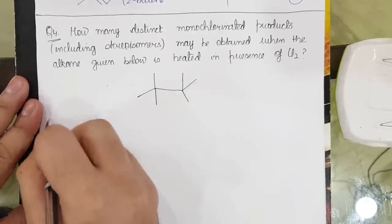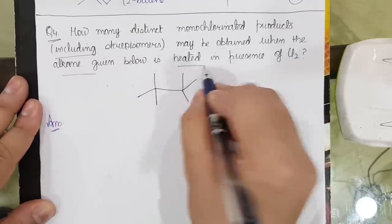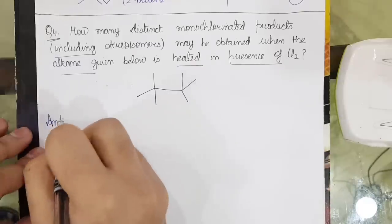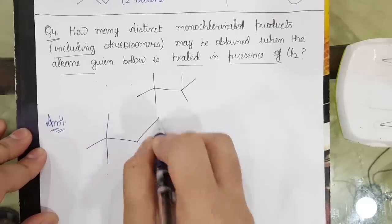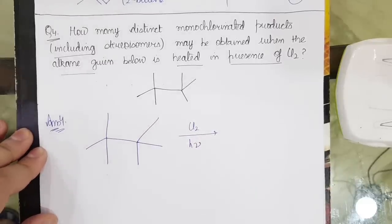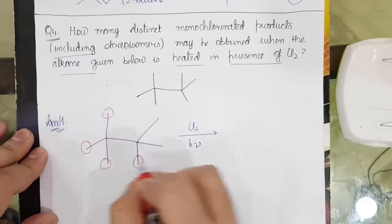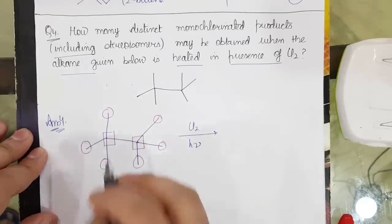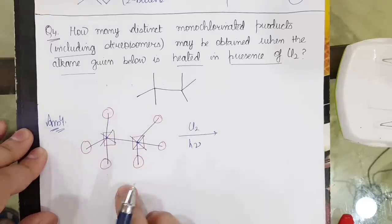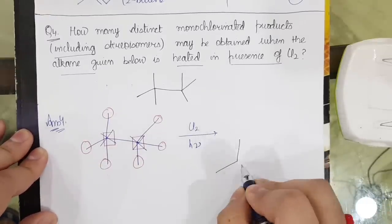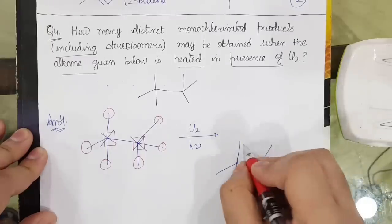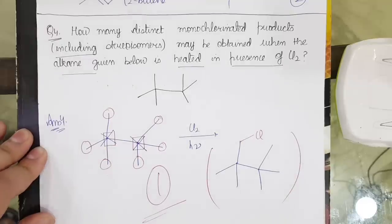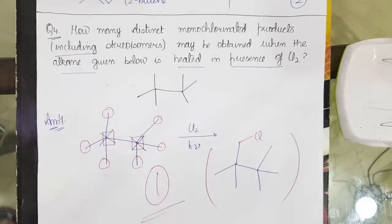The next question: how many distinct monochlorinated products including stereoisomers are possible when the given alkane is heated in the presence of Cl2? This is a radical reaction — Cl radical is formed. Looking at the structure, all carbons marked in circles are identical and all marked as squares are identical in nature. Since the nomenclature is the same, there is no chiral carbon in the product, so only one product is formed on monochlorination.